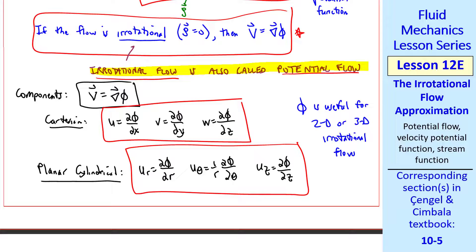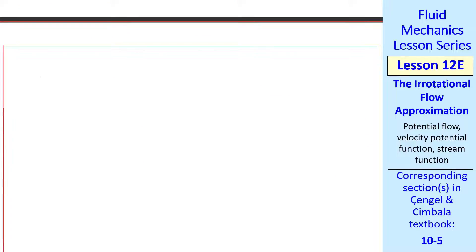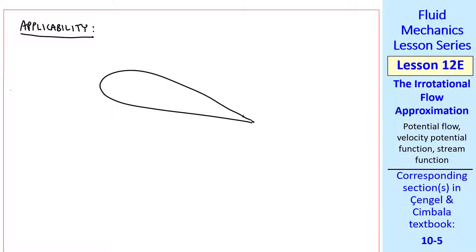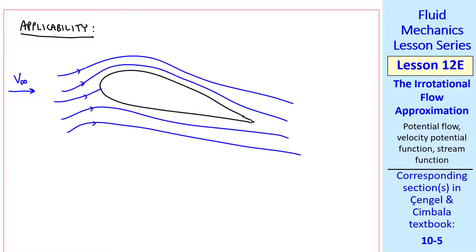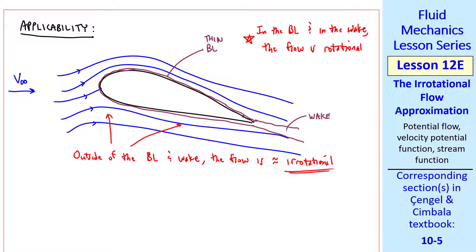Note that phi is useful for 2D or 3D irrotational flow. Let's talk about where irrotational or potential flow is valid. Using an airfoil as an example with free stream flow: provided the flow does not separate, a thin boundary layer forms along the walls and merges into a wake. The flow outside the boundary layer can be considered inviscid and approximately irrotational, while in the boundary layer and wake the flow is rotational.